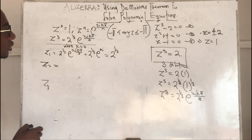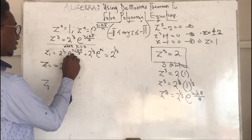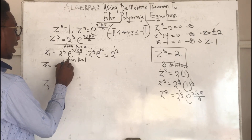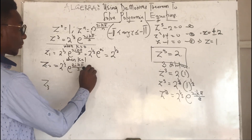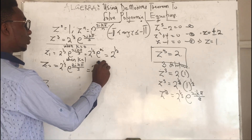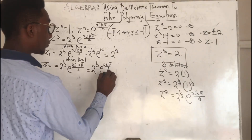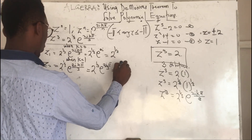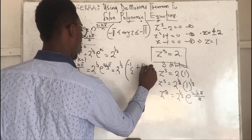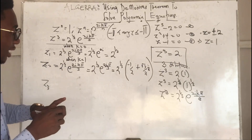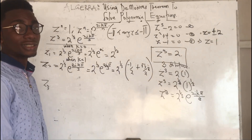The second solution z2 is when k = 1, giving z2 = 2^(1/3) · e^(2iπ/3). When you expand this, it equals 2^(1/3) · (−1/2 + (√3/2)i).